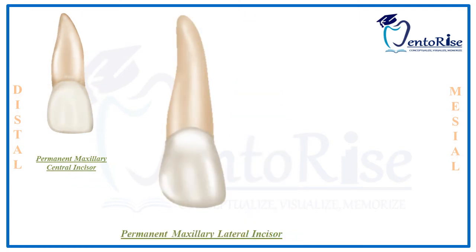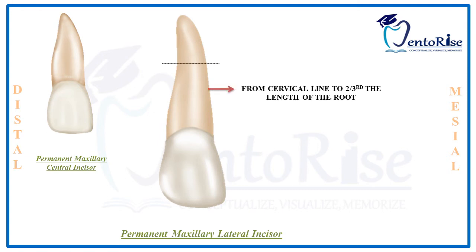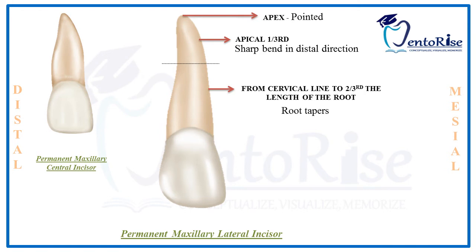Looking at the root of a permanent maxillary lateral incisor from the labial aspect: starting from the cervical line, the root tapers as we move toward the two-thirds length of the root. After this two-thirds length, there is a sharp bend in the root toward the distal direction, ending in a pointed apex. In the central incisor, by contrast, the root was more or less conical in shape.